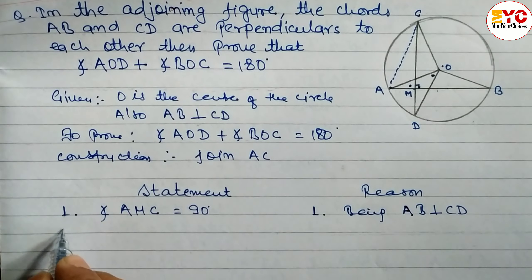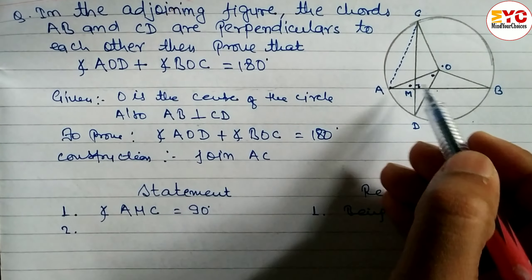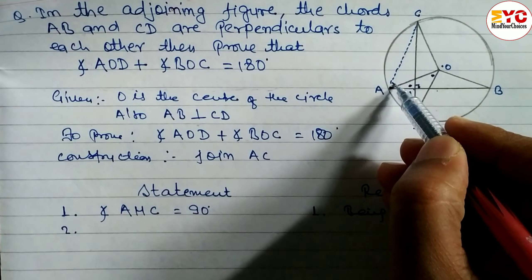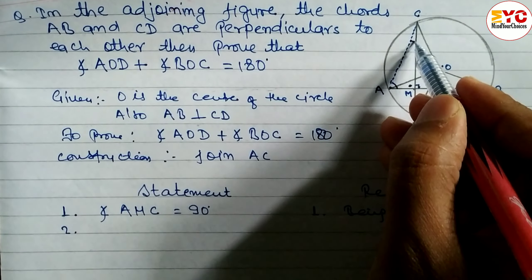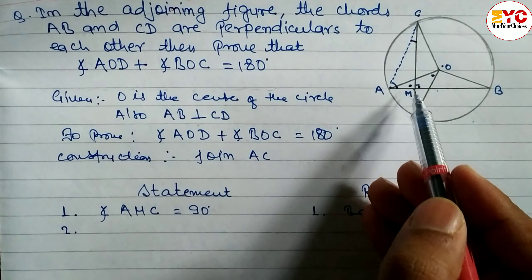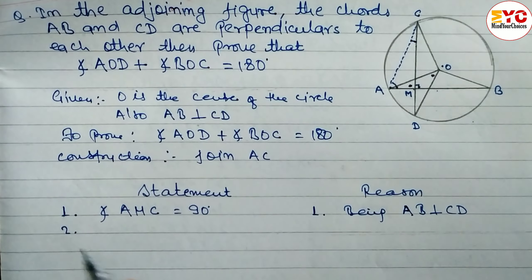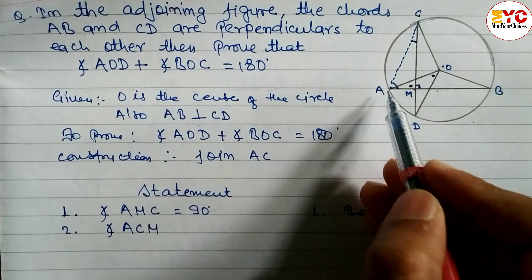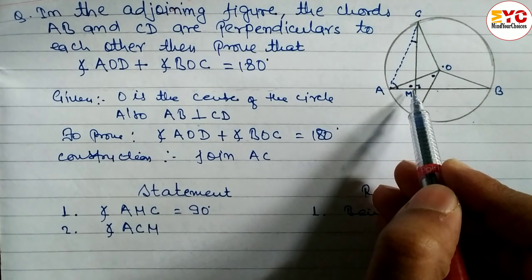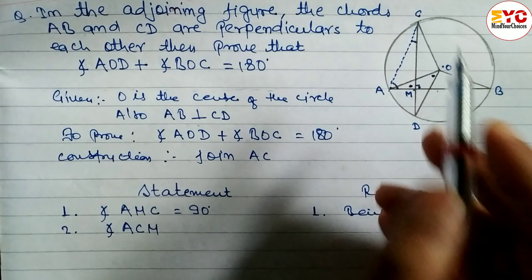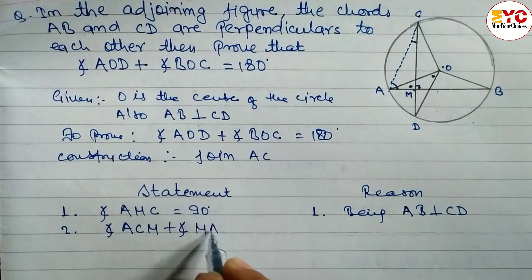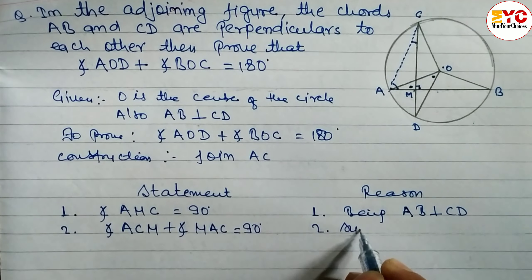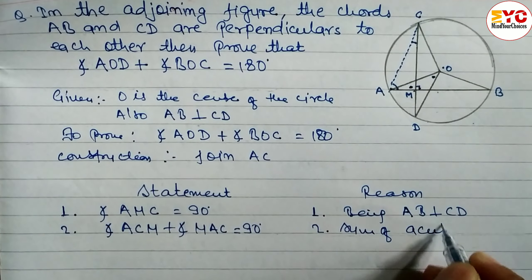Statement 2: We know the sum of angles of a triangle is 180°. Since 90° is already accounted for, the sum of the remaining two angles is also 90°. So we write: angle ACM + angle MAC = 90°. Reason: sum of acute angles of a right-angle triangle.